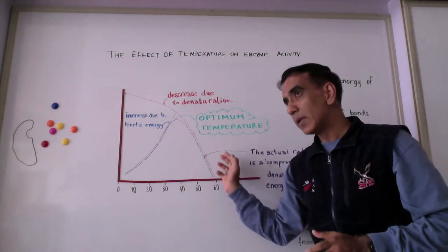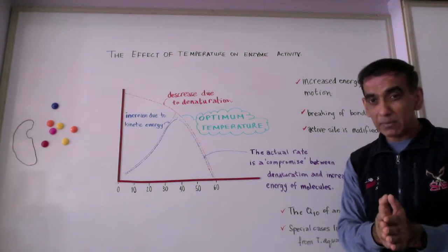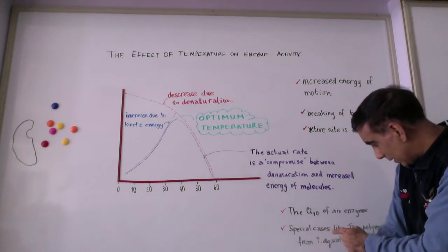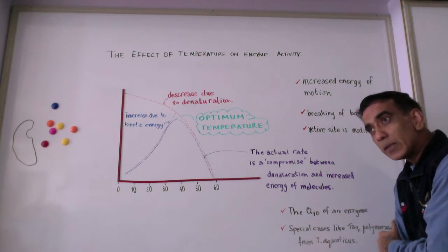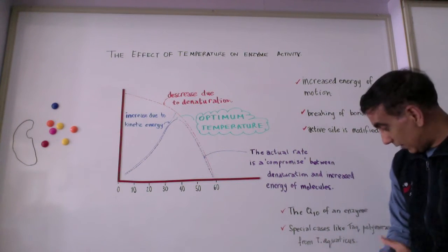And it's also important to realize that this diagram is not representative of all enzymes. A very good example of an enzyme that does not obey these dynamics is the enzyme Taq polymerase, which is used in polymerase chain reaction to make large quantities of DNA.